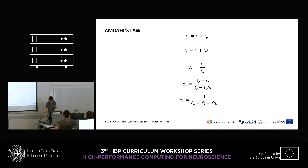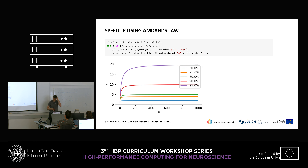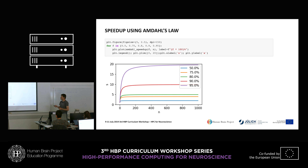This formula has some interesting consequences. Here I've plotted the speed-up from this formula for cases where we can parallelize half of our program, three quarters, 80 percent, 90 percent, and even 95 percent of our program.